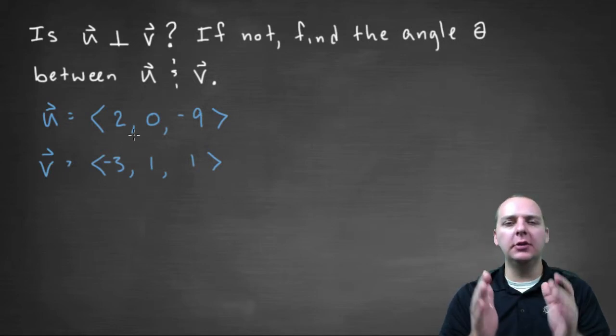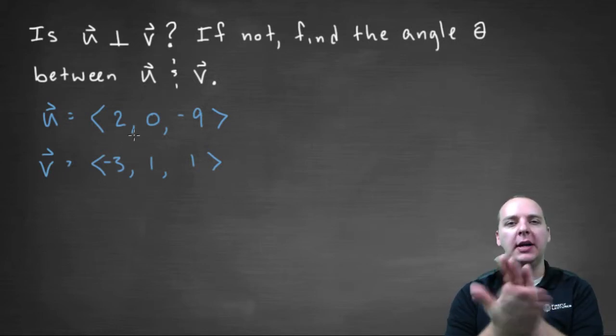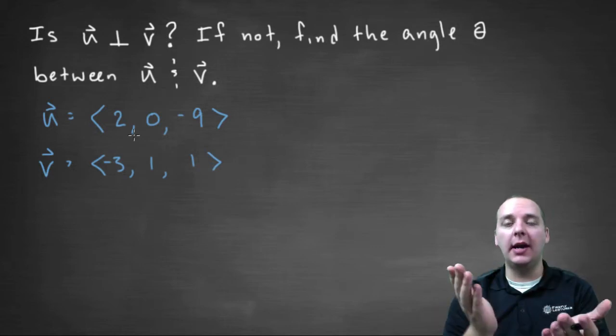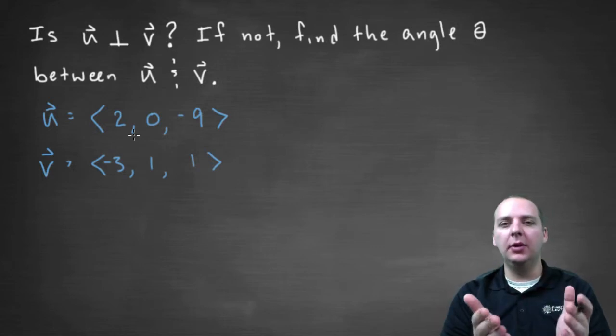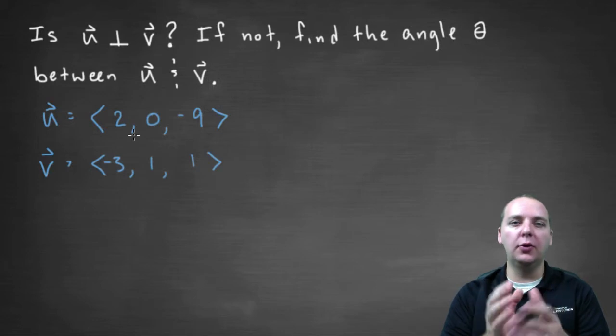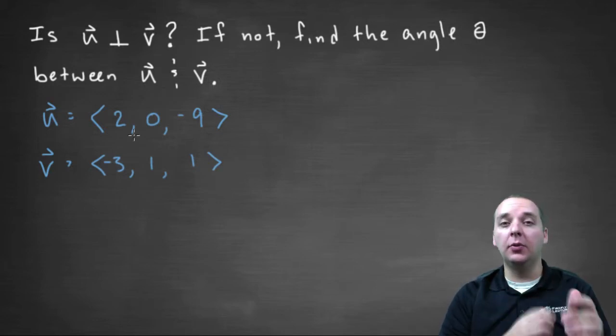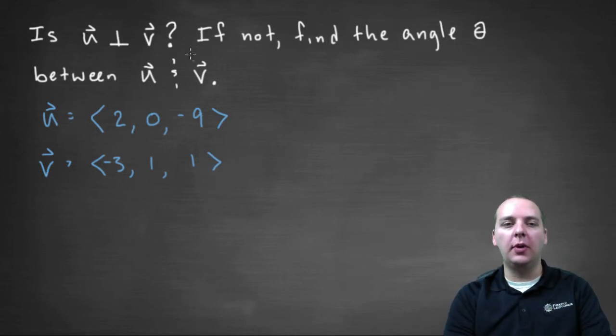So these are hard to visualize because they are in three dimensional space, and we are trying to figure out if they meet at a right angle in space. So I can't really rely too heavily on graphing them and thinking of it in that way. We are going to have to rely a little bit more on algebra here.